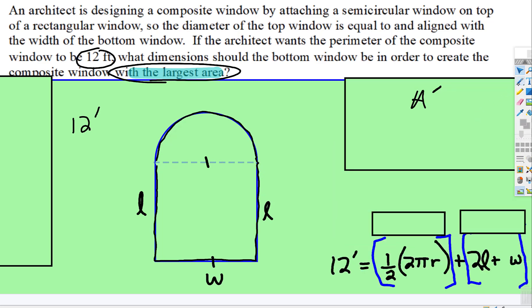So 12 feet is equal to one half of 2 pi r because that's the circumference of a circle and those cancel leaving pi r.